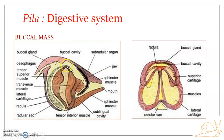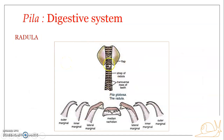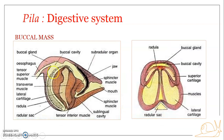Coming to the next part of the buccal cavity — the radula. The buccal cavity contains a very long, ribbon-like, curved structure known as the radula, or lingual ribbon, because it is long and ribbon-like. Its anterior end runs longitudinally over the summit of the odontophore, while its posterior end is placed in a wide radula sac. The radula is slightly bent behind and placed below the buccal mass.